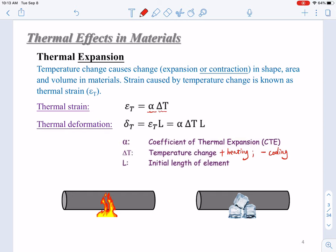In linear scenarios, one-dimensional scenarios, this εT equals ∆T, the deformation, linear deformation due to temperature change over L, the original length of the material. Knowing this, we can also calculate the thermal deformation. This δT equals εT times L. The L is the initial length of the element. Expand it, we can get δT = α∆T times L.